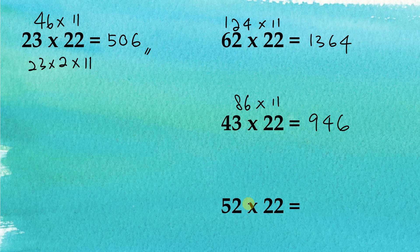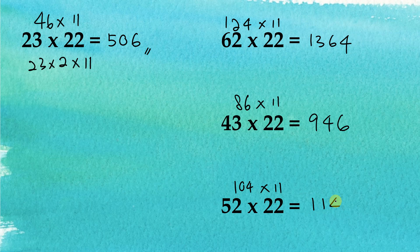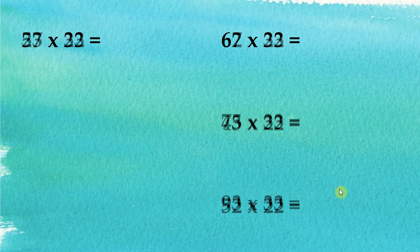For 43 × 22: 8 plus 6 equals 14, so that digit becomes 4, and the last digit is 6, giving 946. Finally, 52 multiplied by 2 equals 104, then 104 multiplied by 11: the first digit is 1, the second digit is 1, the third digit is 4, and the last digit is 4, giving 1144. That's how we multiply numbers by 22.